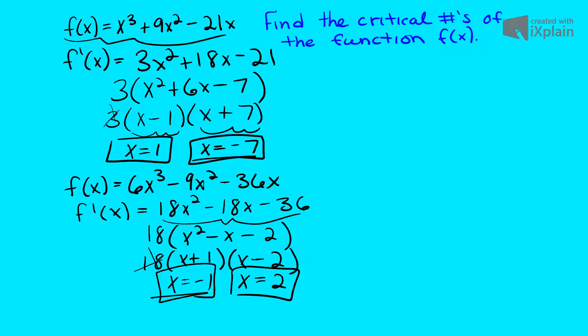Pretty much every one of these problems is very similar in the way that you set it up and do it. So in recapping, we start with our f of x value, and we just take the derivative of it. And by simplifying a couple steps, we end up just getting our x values, and those are the critical points.